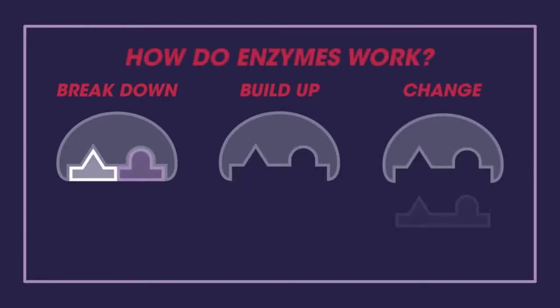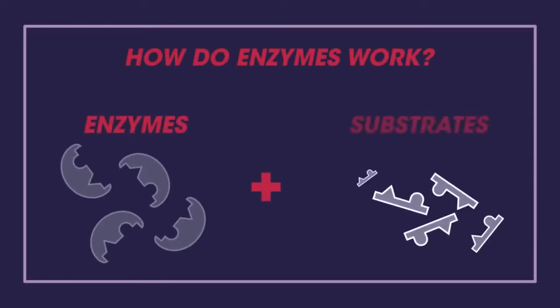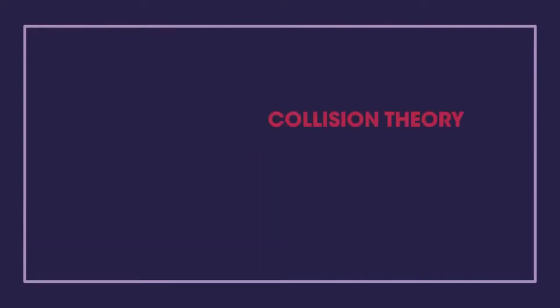So how do enzymes work? Enzymes work in conjunction with substrates. The enzymes and substrates are always moving and occasionally they collide at the right speed and orientation so that the substrate fits into the enzyme at the active site. Collision theory dictates that a collision must occur with sufficient energy and in a specific orientation for a reaction to occur.